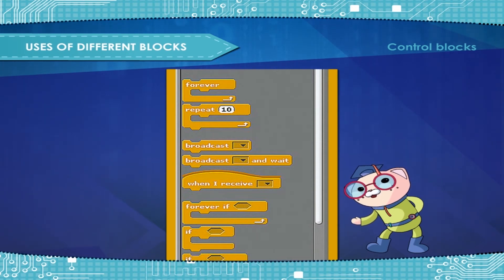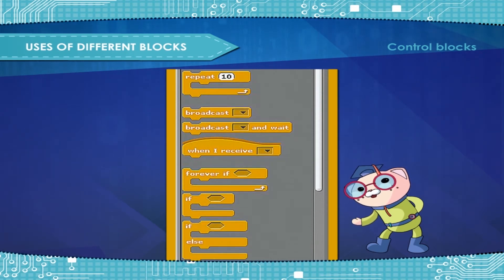If then else checks the condition so that if the condition is true, the blocks inside the first C will activate. And if the condition is false, the blocks inside the second C will activate.